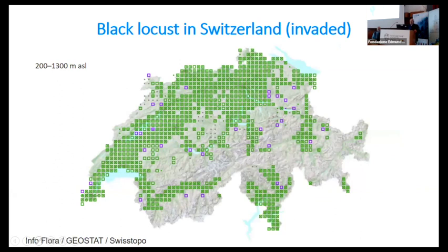For the black locust, this is the area it occupies — more or less contiguously spread all over the lower areas in Switzerland. This is the same picture Bart already mentioned for all of Europe: it is really widespread.